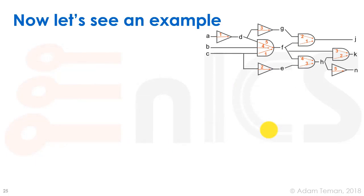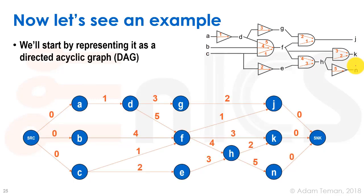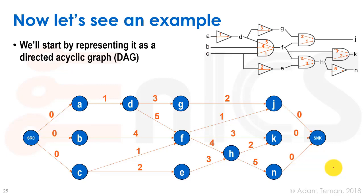We take our design and represent it as a directed acyclic graph. We make a node for each signal: A, B, C, D, G, E, F, H, J, K, and N, with all the connections between them. For example, A to D has delay 1, D to G has delay 3, D to F has delay 5, and F to K has delay 3. We also add a source node connected with zero-delay edges to all primary inputs, and a sink node connected with zero-delay edges to all primary outputs.